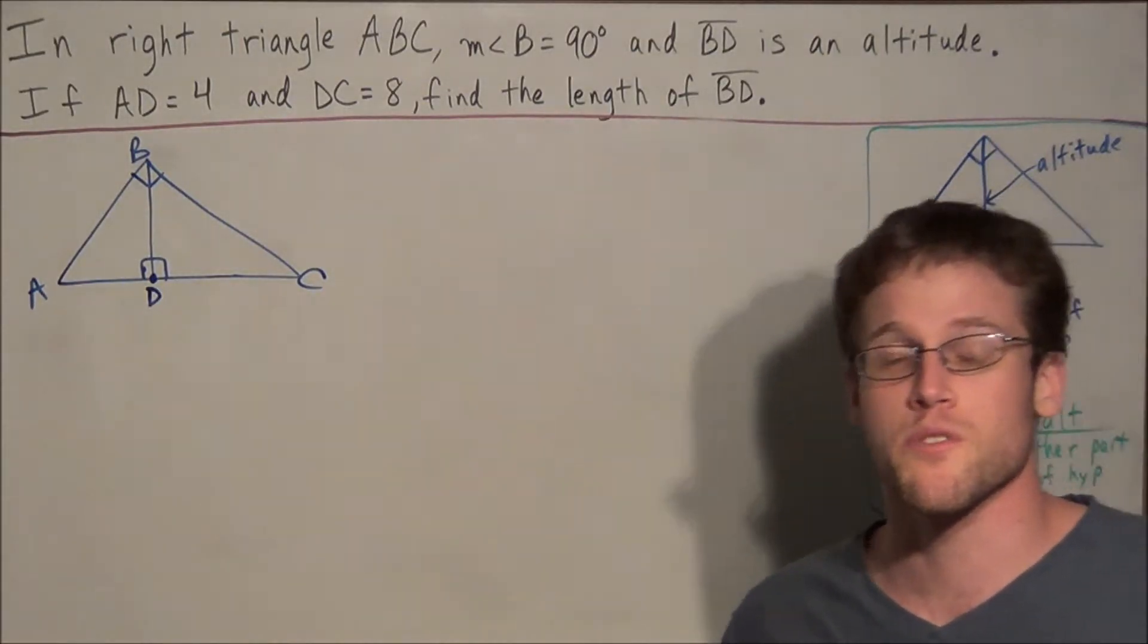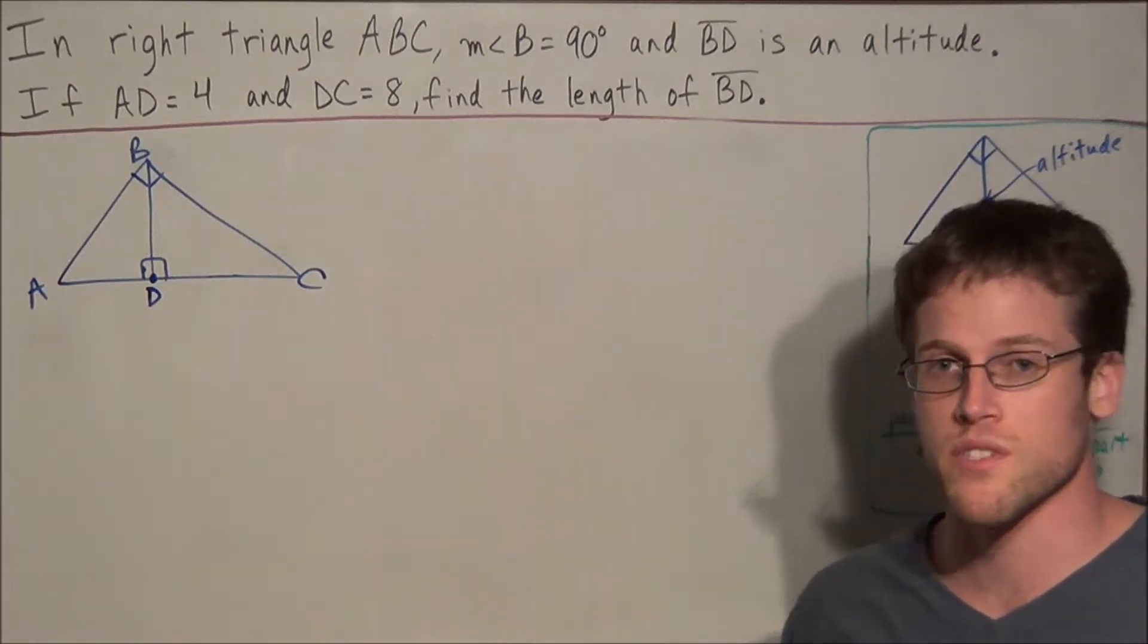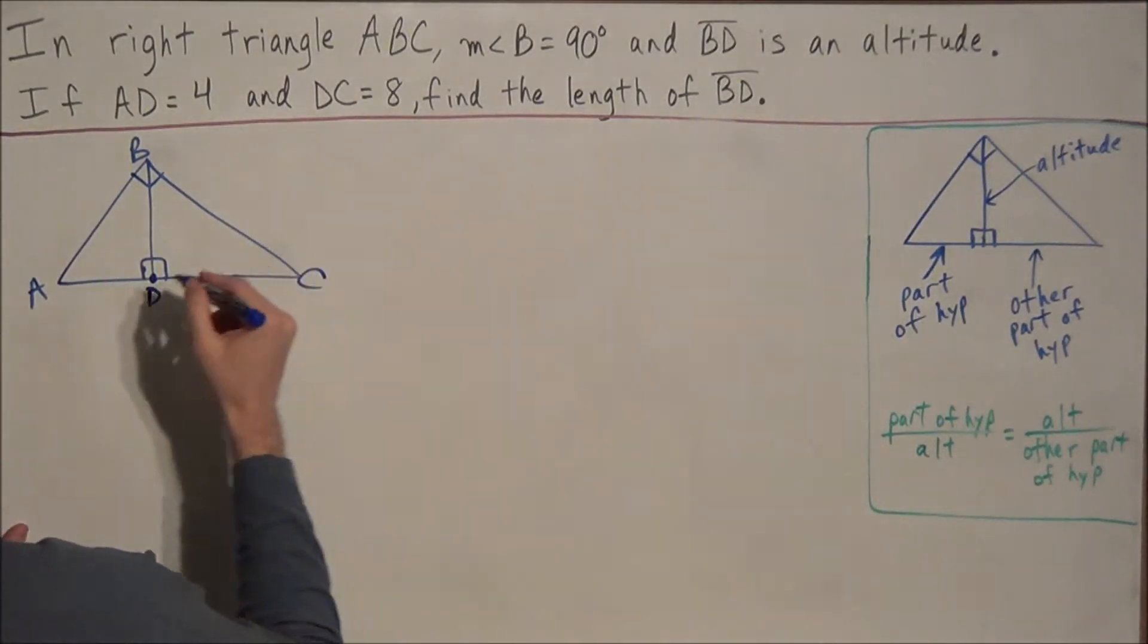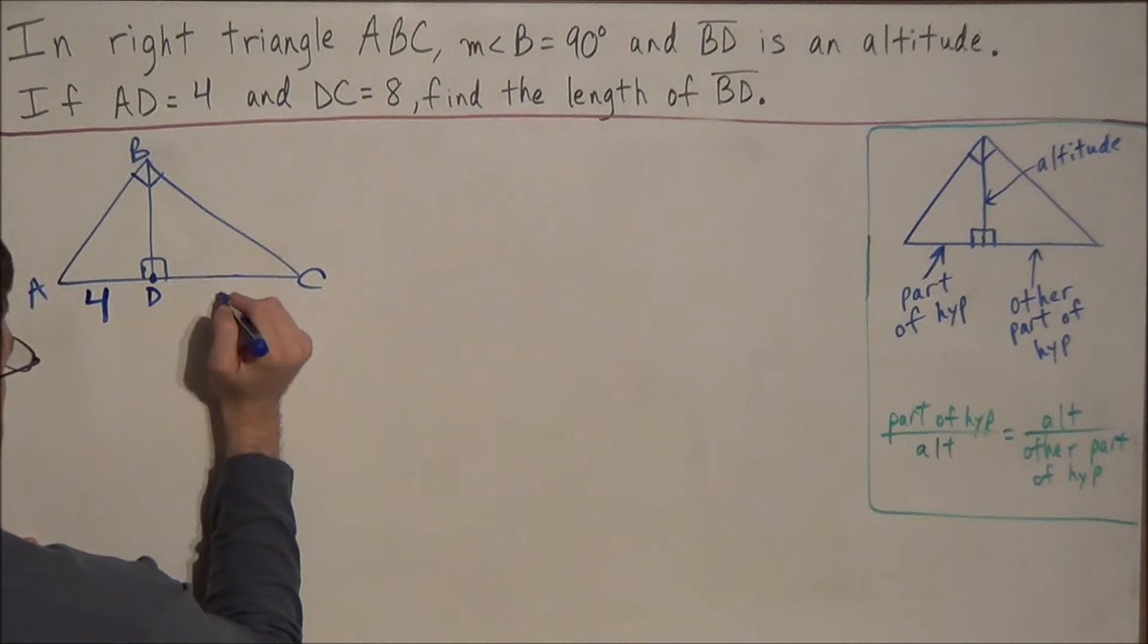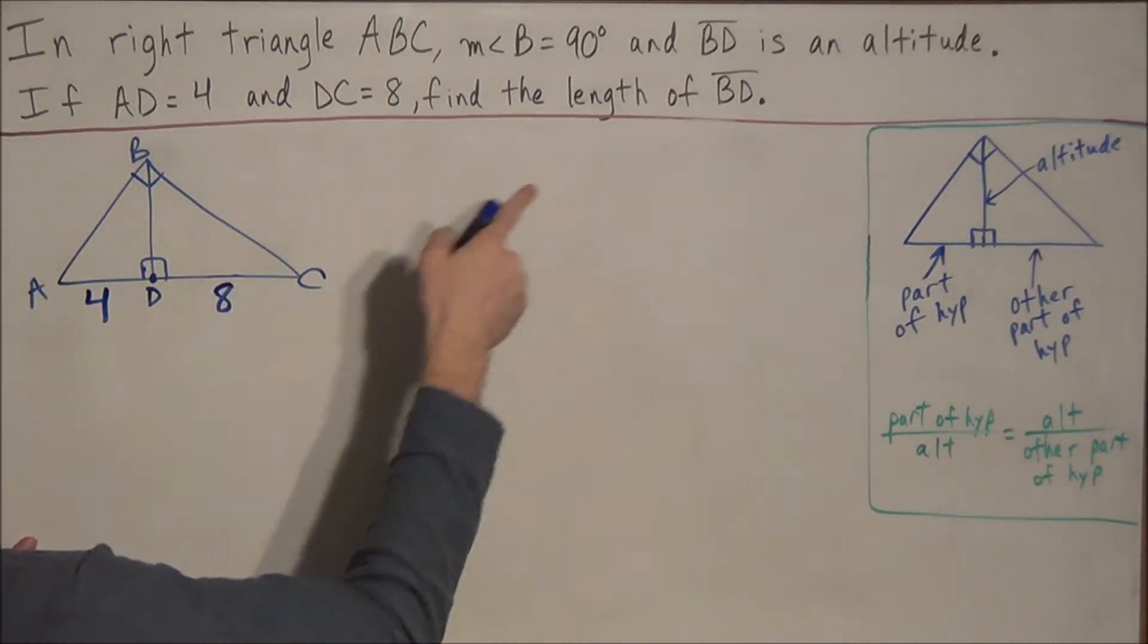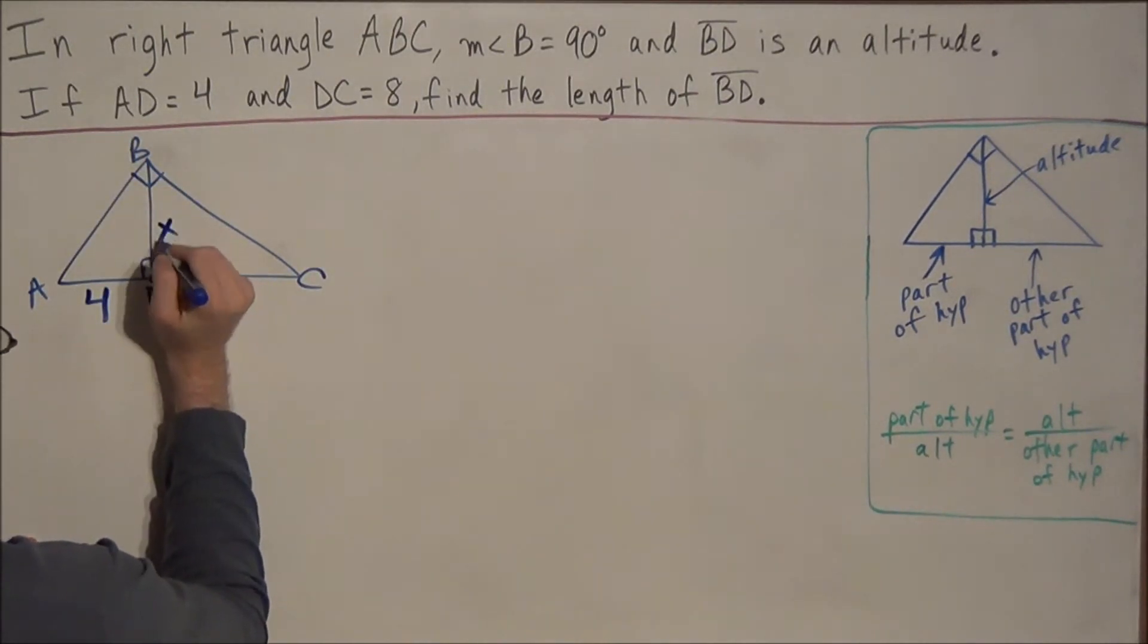So the first thing we can do with this problem is label all the information that was given to us. We know that AD is equal to 4, we know that DC is equal to 8, and we're trying to find the length of BD so we can call this segment X.